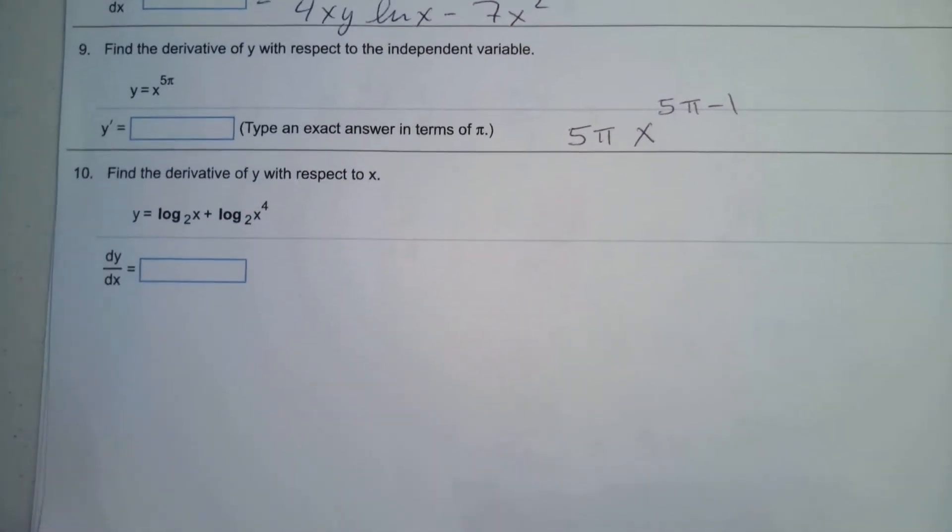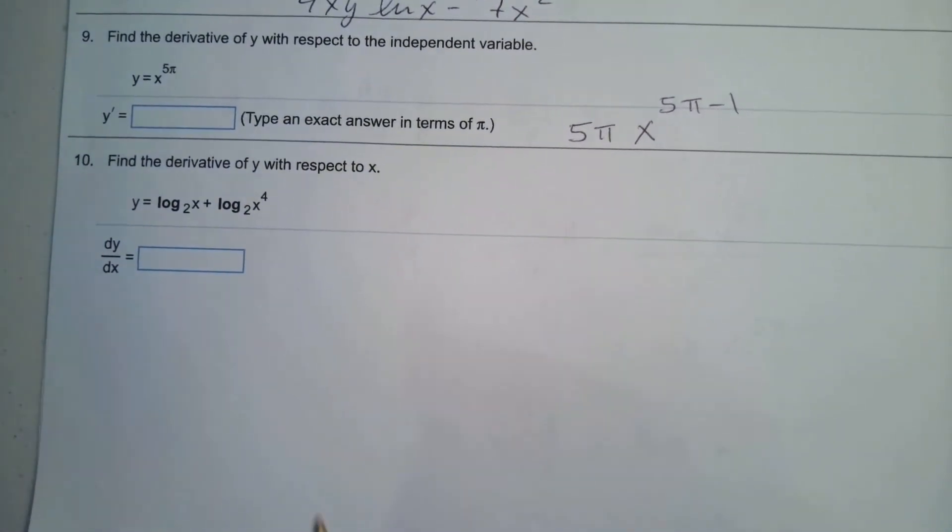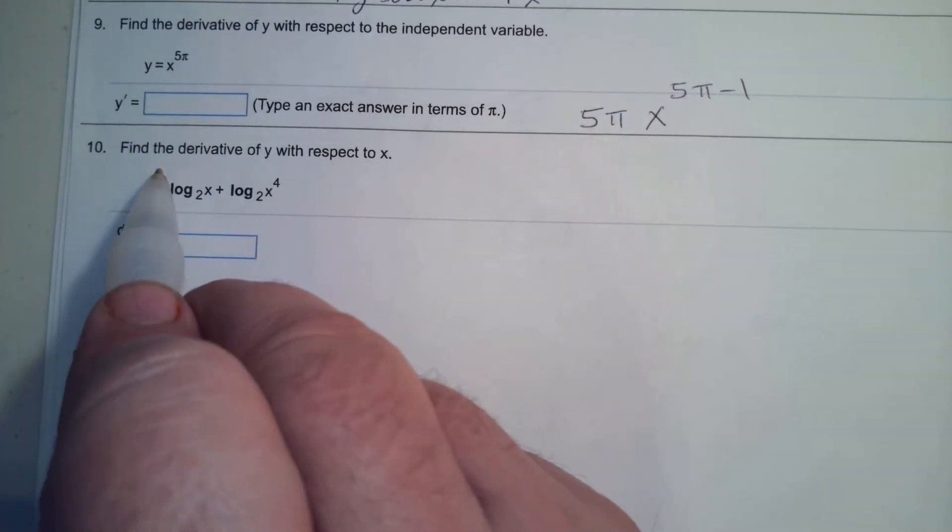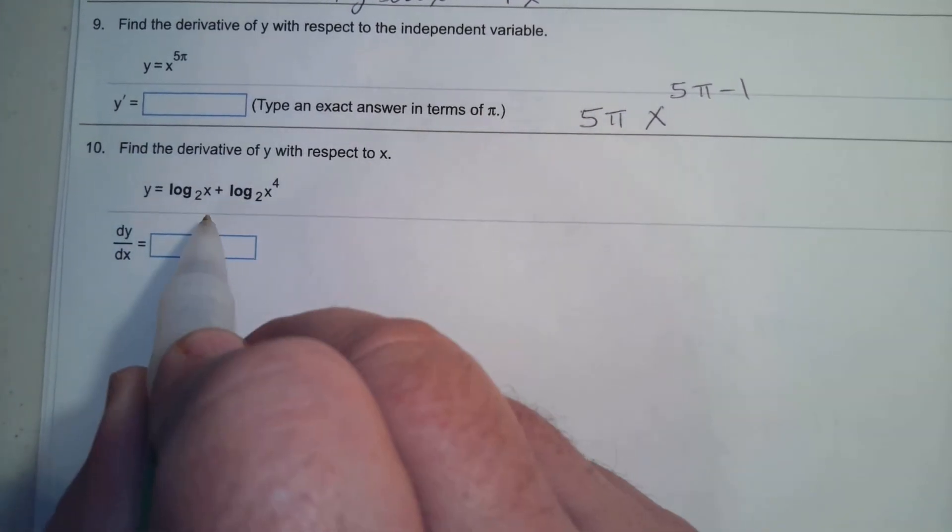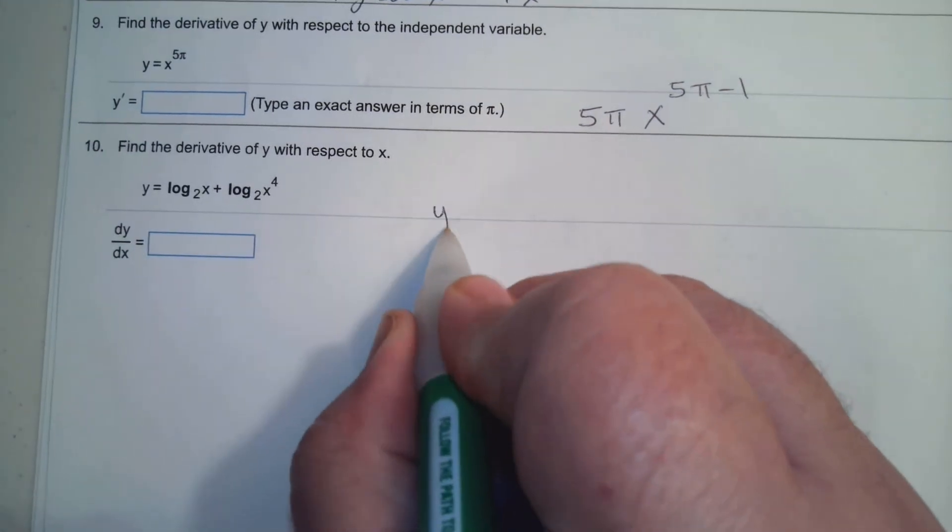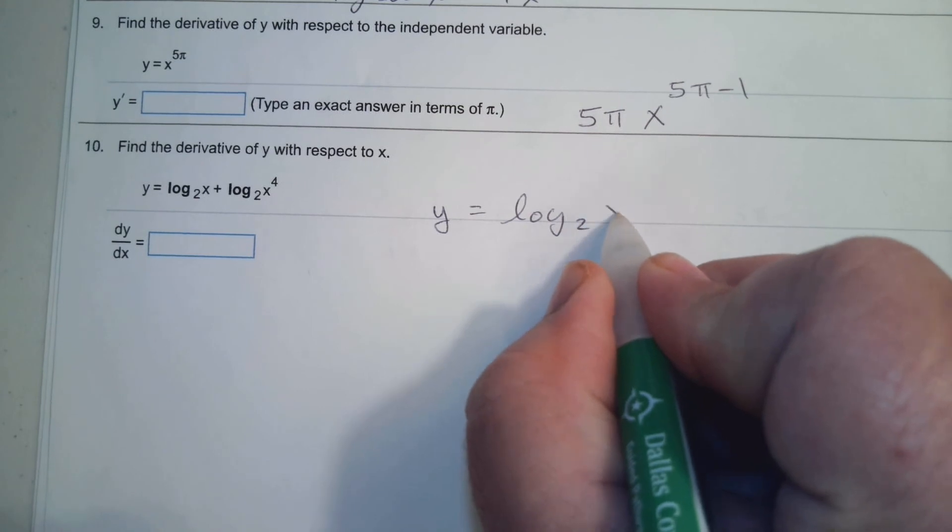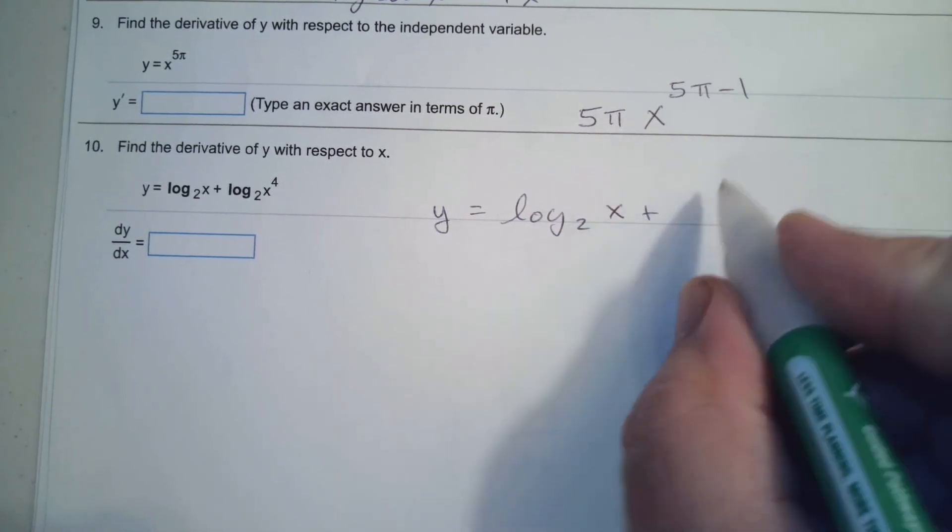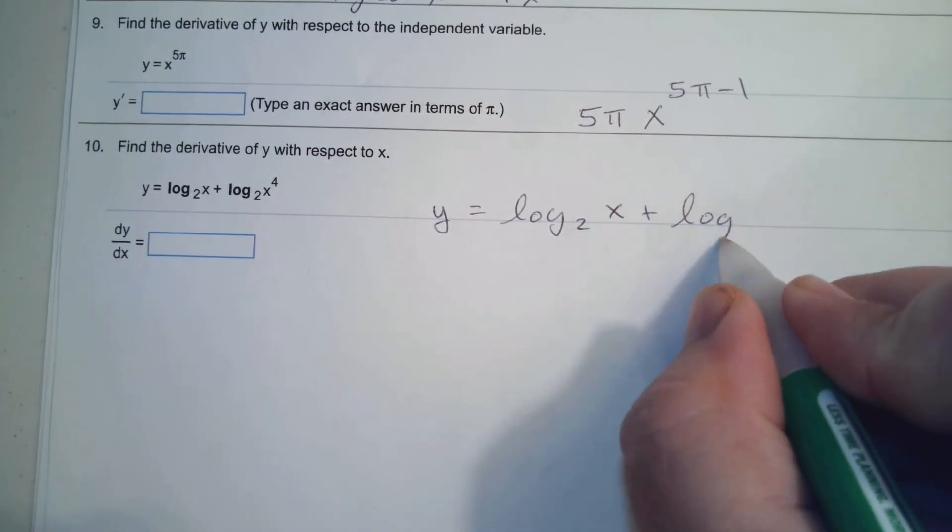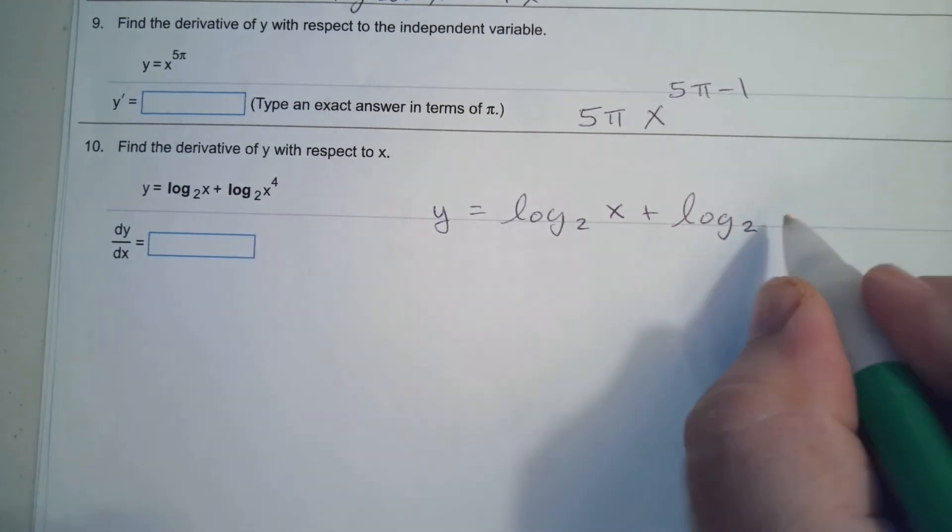And number 10, the last one. Find the derivative of y with respect to x. So we have y equals log base 2 of x plus log base 2 of x to the 4th.